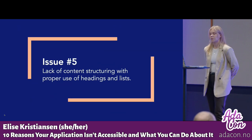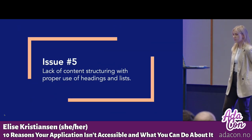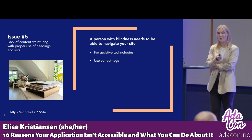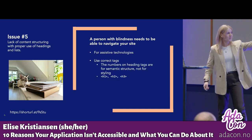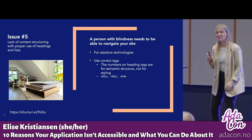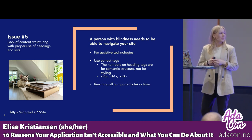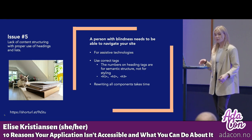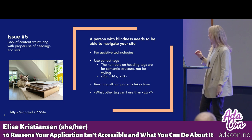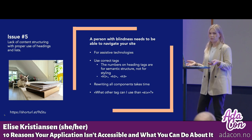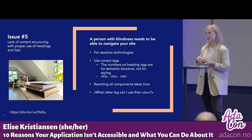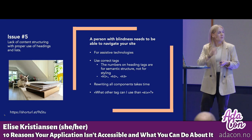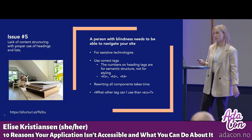Issue number five: lack of content structuring with proper use of headings and lists. For assistive technologies to work optimally, the web app needs to be written with the correct tags. The different heading numbers are for semantic structure, not for styling, as so many people use them. It's important to begin building the web app with the correct tags from the very beginning, because rewriting it will take time. Every time you want to use another div, think about another tag to use — p tags for paragraphs, nav tags for navigations. HTML is a rich language, and using the correct tags will solve many accessibility issues.